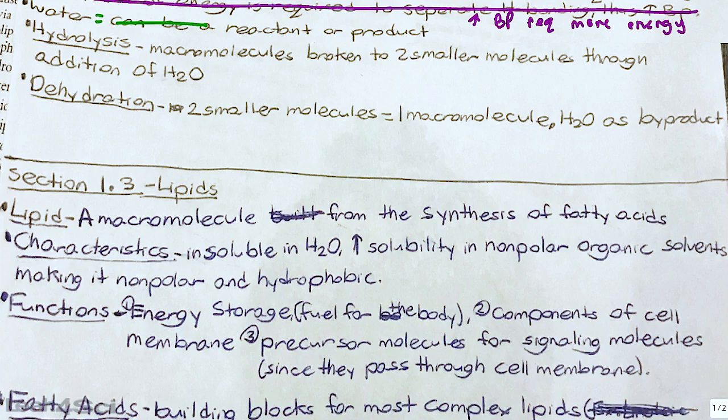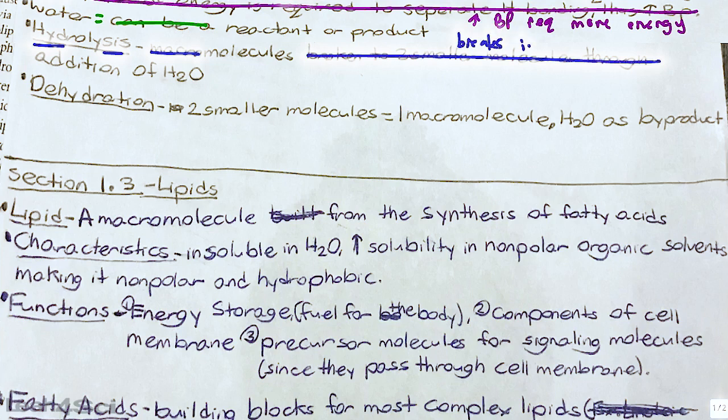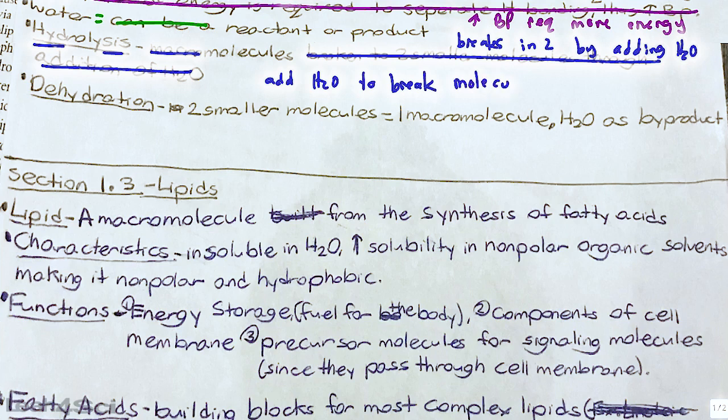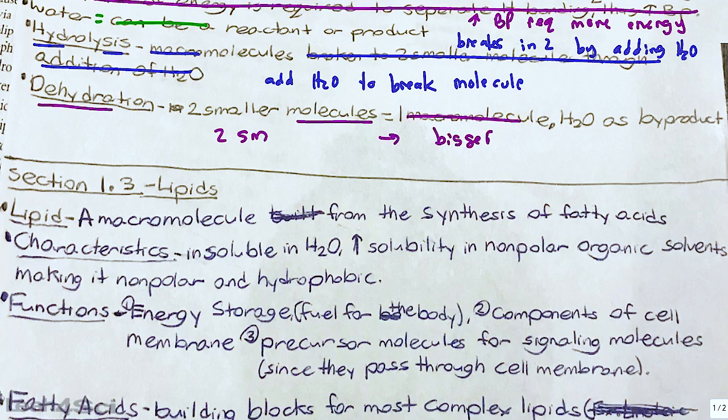Hydrolysis, macromolecules broken into two molecules through the addition of water. Well, we have hydrolysis, I would just write hydrolysis. So, we're implying a macromolecule, we could just write molecule breaks in two by adding water or by adding H2O or how I would have done this is add H2O to break the molecule. Dehydration, two smaller molecules equals one macromolecule, H2O is a byproduct. So dehydration, we can say two small molecules yields one bigger and you don't even need the word molecule, it's implied plus H2O. H2O is a byproduct plus H2O shorter and faster.